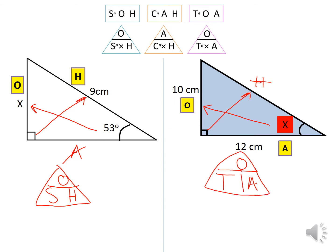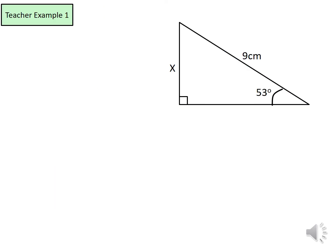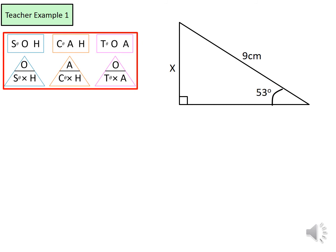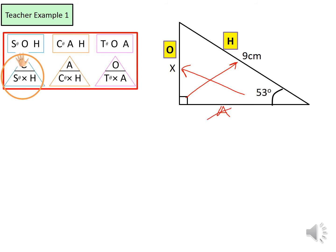Here's an example of the missing length we need to find. Pause the video if you want to have a go first. To find the missing length, label the sides to choose the correct trig ratio. Opposite the right angle is the hypotenuse, opposite the angle is the opposite side, and we're left over with the adjacent. We don't need the adjacent, so we use the opposite and hypotenuse, therefore we use sine.